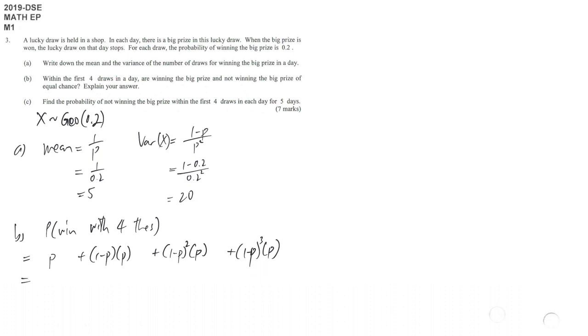And then compare with not winning within four times - that means we just have to ensure the first four times all fail. What happens after, you just simply don't care about that. So this gives you 0.4096.